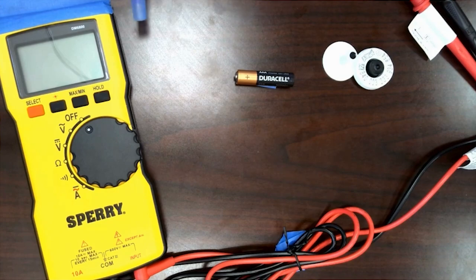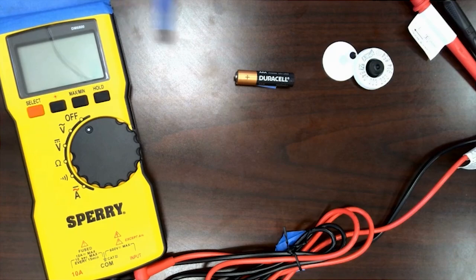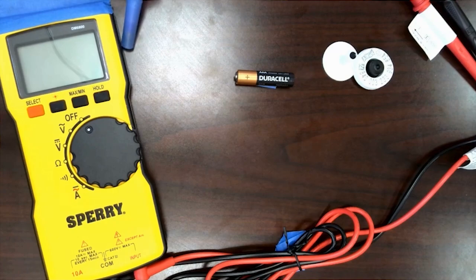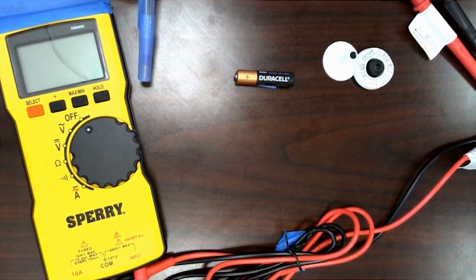So we're going to be looking for power sources within these tags using a multimeter. This is a Sperry DM6800 thin auto ranging multimeter. It can detect DC current, DC power from 200 millivolts all the way up to 600 volts. We're going to test it against several different sources of power.